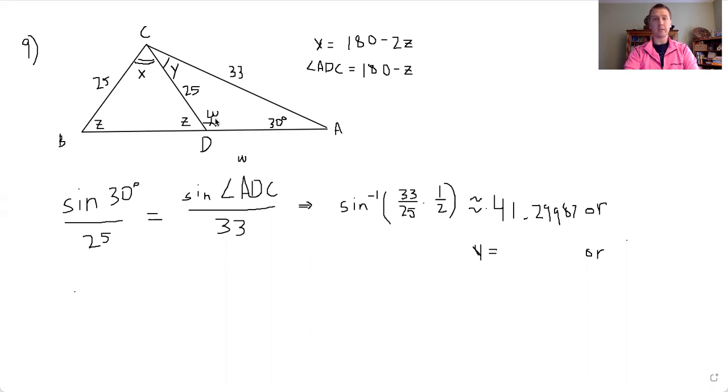I wrote down certain things like this. So y is going to be this angle DCA, which is something we're looking for, and x is this angle BCD, which is also something we're looking for. But first of all, I'm going to try and find this angle CDA, or the measure of w. So I set up the law of sines. Sine of 30 divided by the opposite side equals the sine of this angle divided by its opposite side, and this is where I made a mistake. I wrote 30 instead of 33.